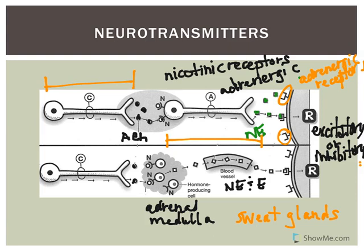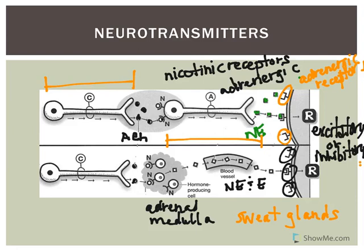The adrenergic receptors - alpha-1, alpha-2, beta-1, beta-2, and beta-3 - will bind either norepinephrine or epinephrine. These are referred to as metabotropic receptors, not ionotropic. They're G-protein coupled receptors that elicit their effects indirectly, affecting ion channels - either opening or closing them - depending on what specific adrenergic receptor and second messenger system is involved.